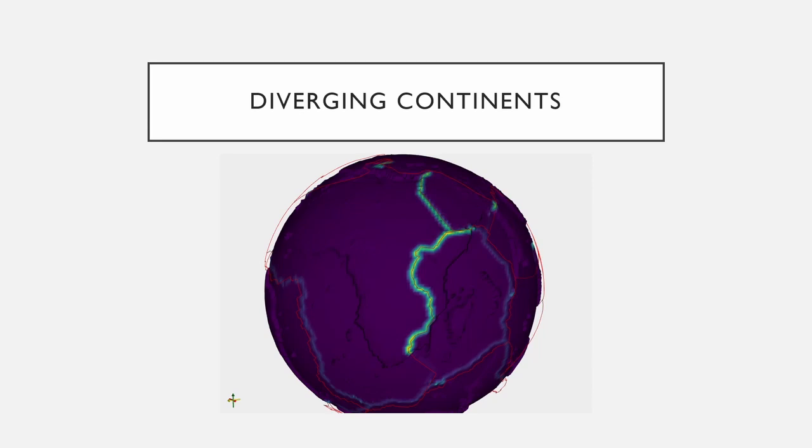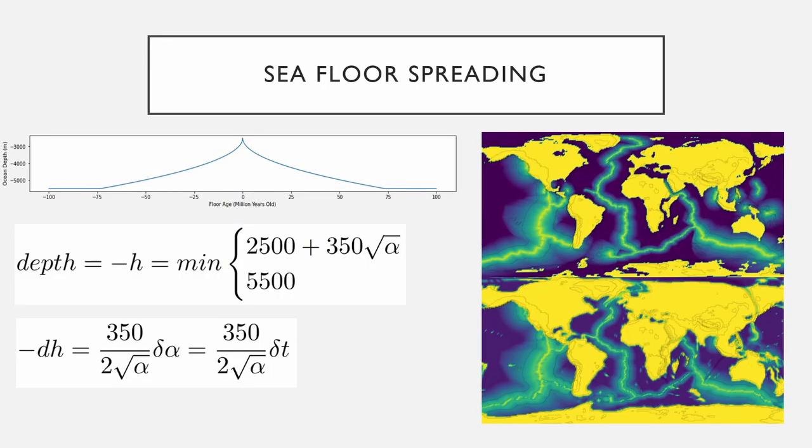It is generally accepted that the depth of deep ocean floors is given by the first equation shown here, where alpha is the age of the floor. As such, we will need to estimate and track the ocean floor age as it progresses over time. To estimate the initial age, we can use the distance that vertices are from mid-oceanic ridges, which is a diverging plate boundary in the ocean where floors are newly generated. We can then use the speed of divergence to estimate the age.